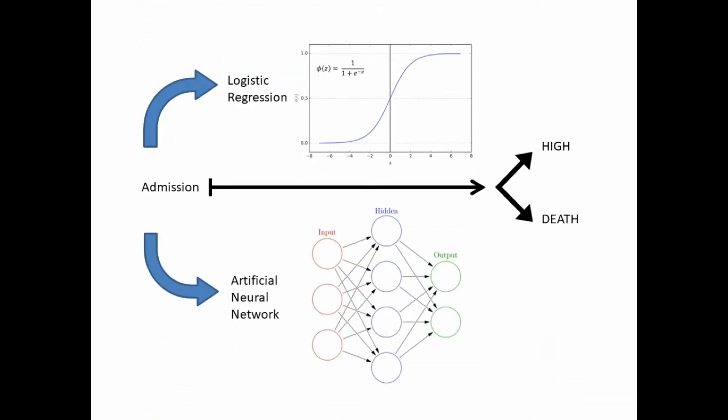A bivariate and multivariate logistic regression was performed with death as the outcome. A mortality model using artificial neural networks was also proposed.